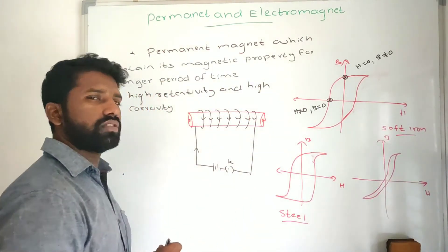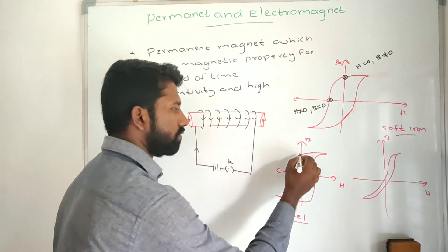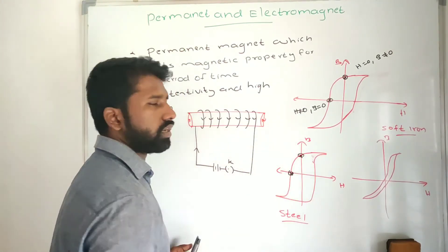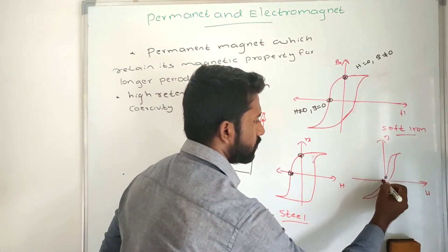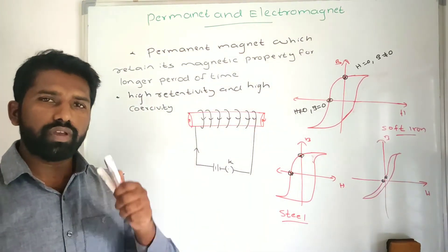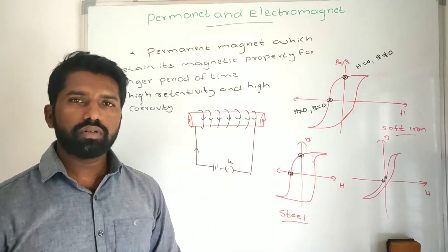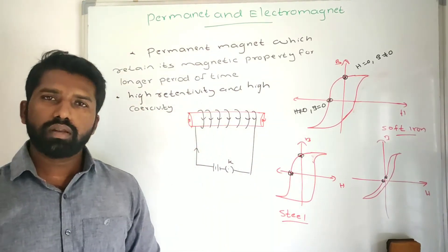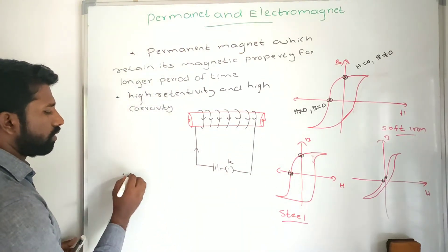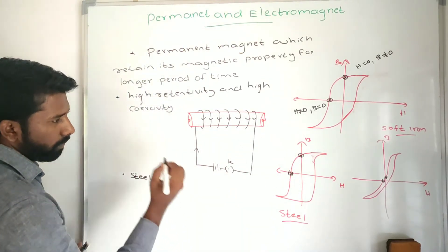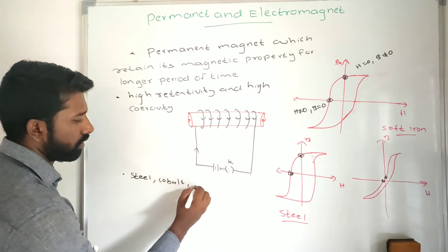If you look at the steel hysteresis loop, the retentivity and coercivity are high. But in soft iron, both the retentivity and coercivity are very low. So the material chosen for making permanent magnets is steel. Other materials you can choose are cobalt and alnico.